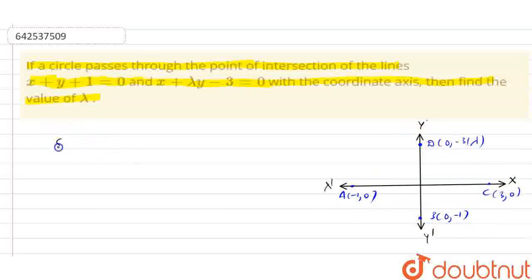So we know that we can write since A, B, C, D are concyclic, therefore OA into OC that will be equals to OB into OD.